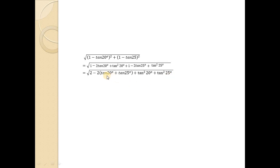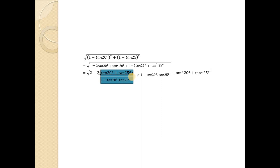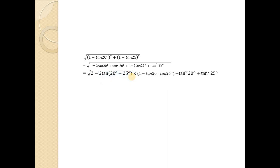The technique here is to convert the expression using the tan(A+B) formula. We are going to convert the term into the form tan(A+B), where A is 20° and B is 25°. For this, we divide by 1 minus tan(A)·tan(B), and for equalization we multiply by the same factor.